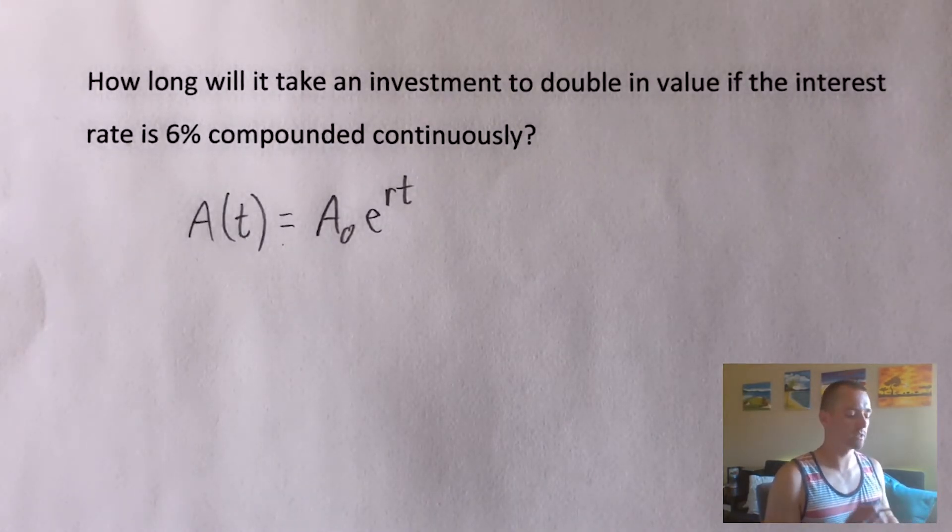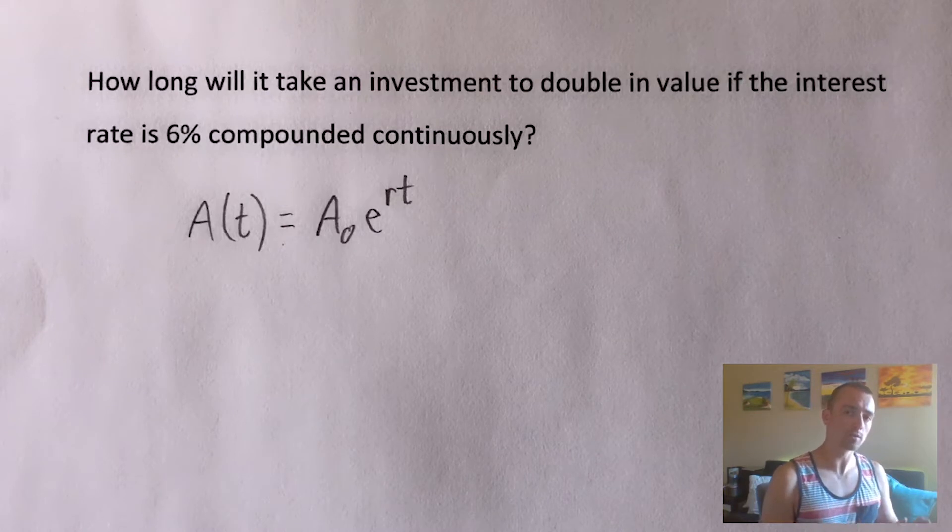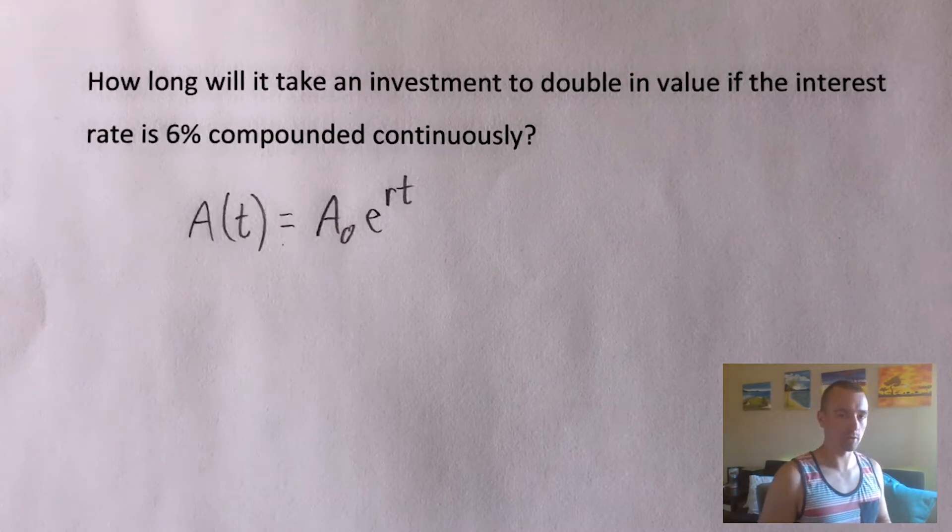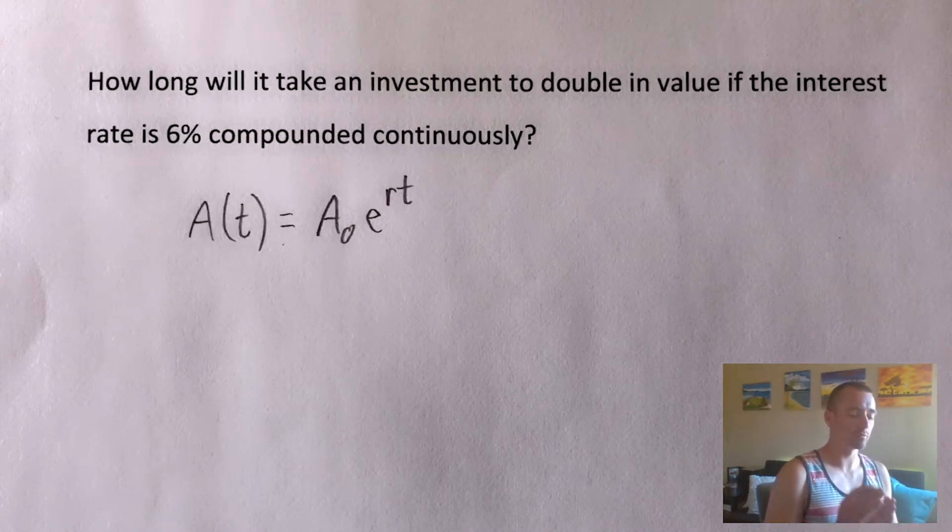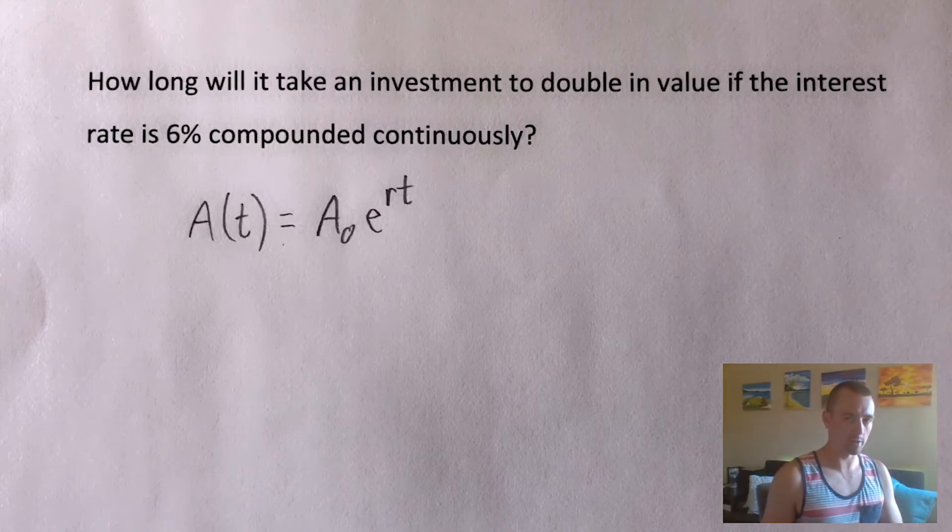So this is kind of a deceiving question, because obviously, it doesn't tell you how much money you start with. All it says is we want to figure out how long it takes for our money to double. Well, the interesting thing about continuously compounded interest, or really any type of exponential growth and decay problem is that the amount of money in this account is going to grow at a rate that is proportional to the amount of money in the account.